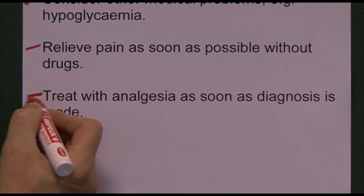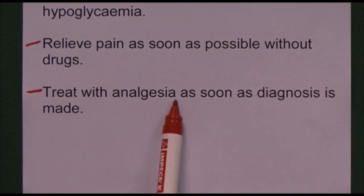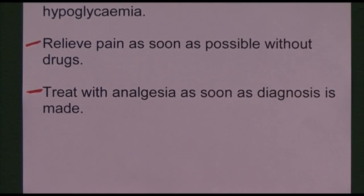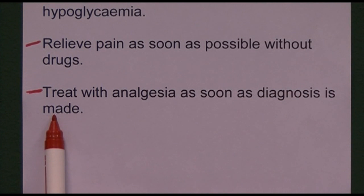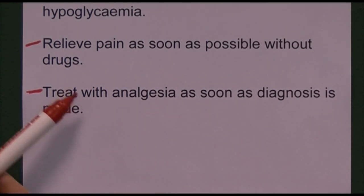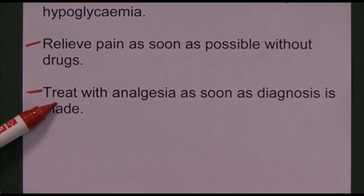Analgesic options in A&E include ibuprofen (a non-steroidal anti-inflammatory), paracetamol, and codeine phosphate. Alternatively, we might titrate in 10 milligrams of intravenous morphine with an appropriate antiemetic. However, if analgesics are given too early, they may interfere with diagnosis and assessment. Think about non-pharmacological pain relief first, and then — as soon as senior medical staff are satisfied — treat with analgesics to make the patient as pain-free as possible.